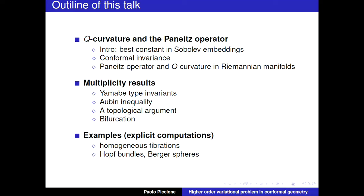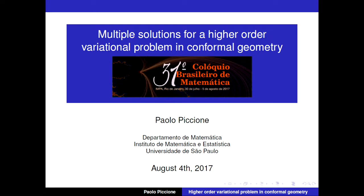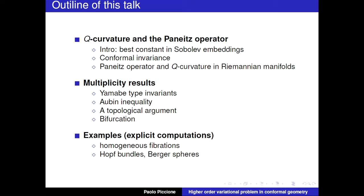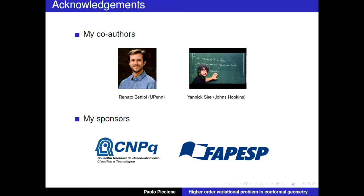This problem has many analogies with the Yamabe problem. The outline of my talk: I will discuss the Q curvature and the Paneitz operator, first introducing it in the space R^n and then discussing its extension to Riemannian geometry. In the second part I will tell you about multiplicity results and give some examples. I also want to make some acknowledgements — these are my co-authors.